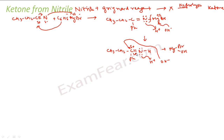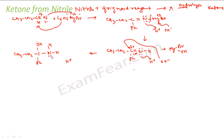Again we have more H+ ions in the system. The H+ will look for a lone pair — nitrogen has one and oxygen has one. H+ attaches to nitrogen, because NH3 can leave easily as a good leaving group. So H+ attaches to the NH2, making it NH3+. But nitrogen doesn't like a positive charge since it's electronegative, so this bond breaks — electrons go to nitrogen, it becomes neutral, and carbon gets a positive charge.